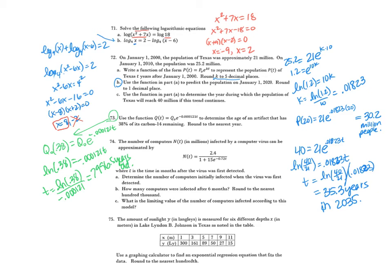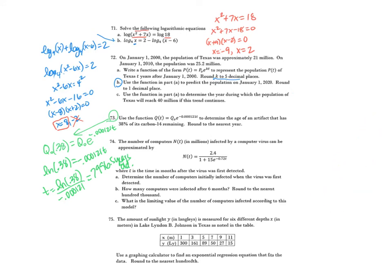Problem 74: the number of computers infected by a virus can be approximated by a logistic function. Determine the number of computers initially infected by evaluating N(0). N(0) equals 2.4 divided by (1 plus 15·e^0), which equals 2.4 divided by 16, giving 0.15 million computers.